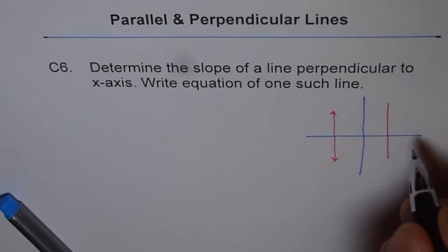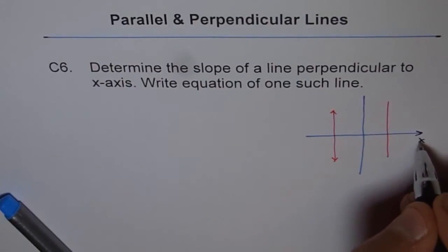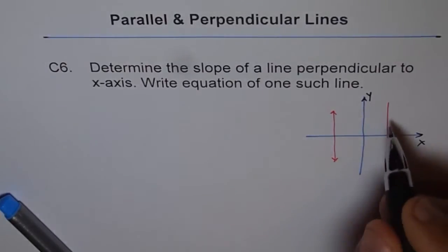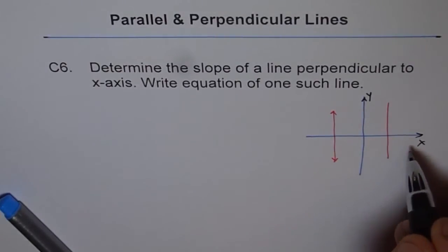So vertical line will be perpendicular to x-axis. Is that okay? This is our x-axis, the horizontal line. And the vertical line is y-axis. So any line which is vertical will be perpendicular to horizontal line. Right?